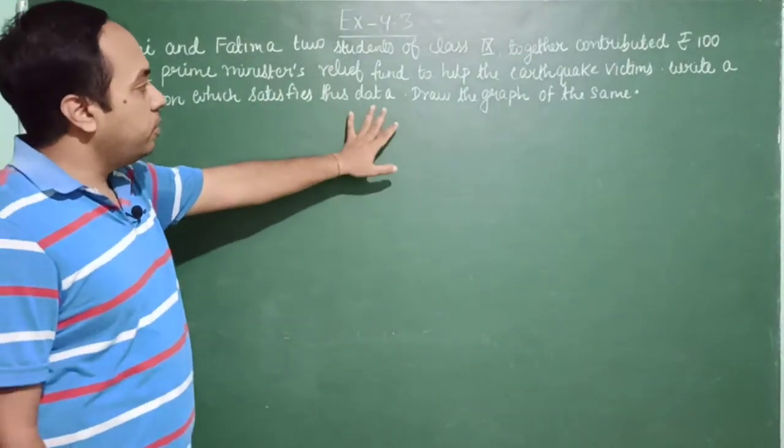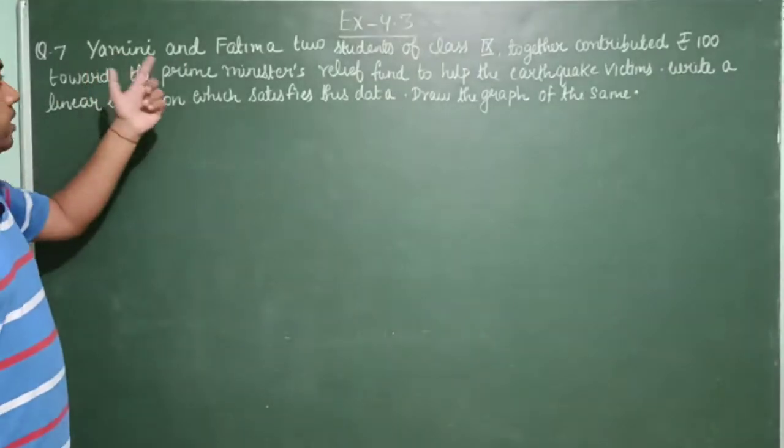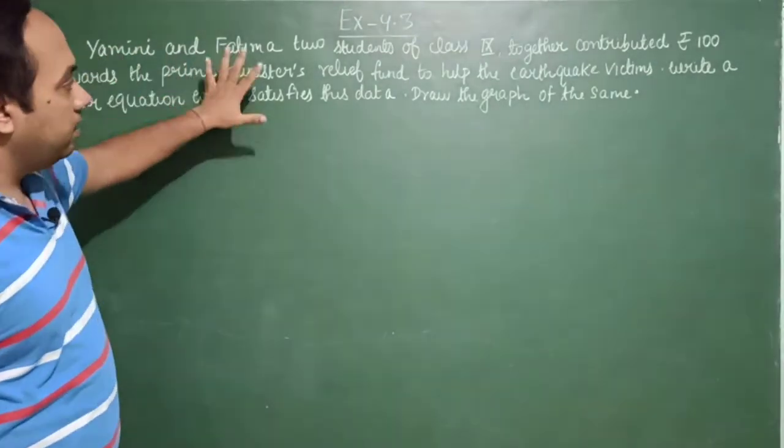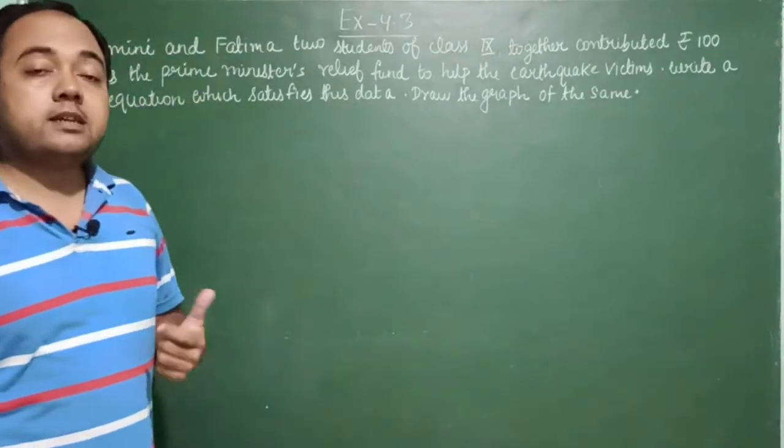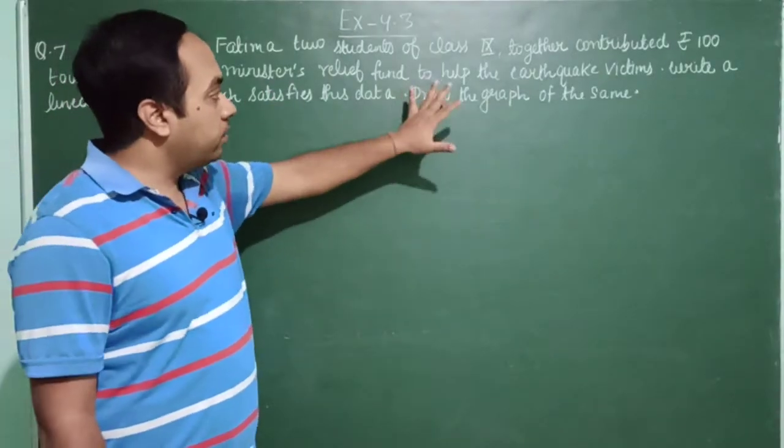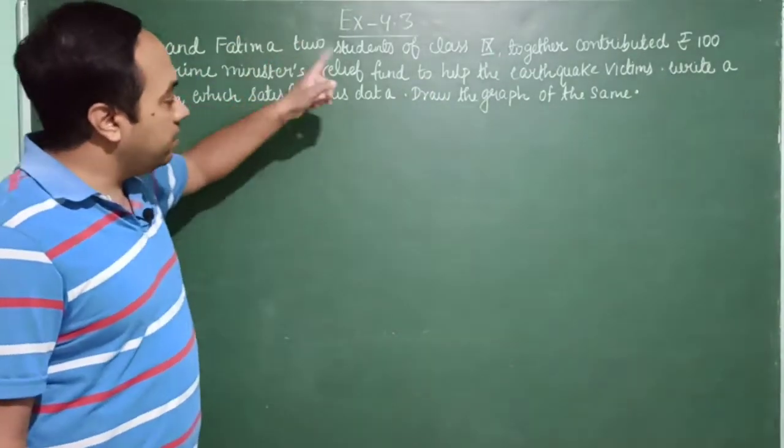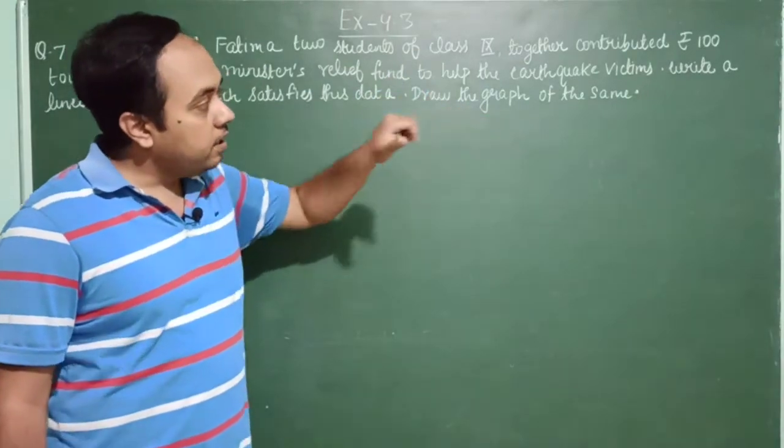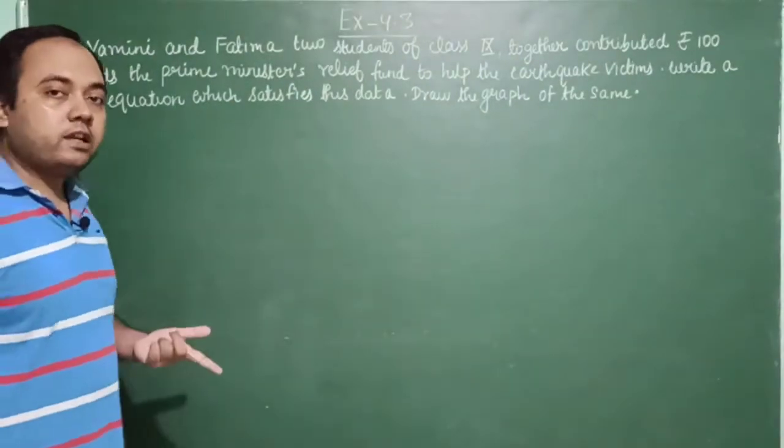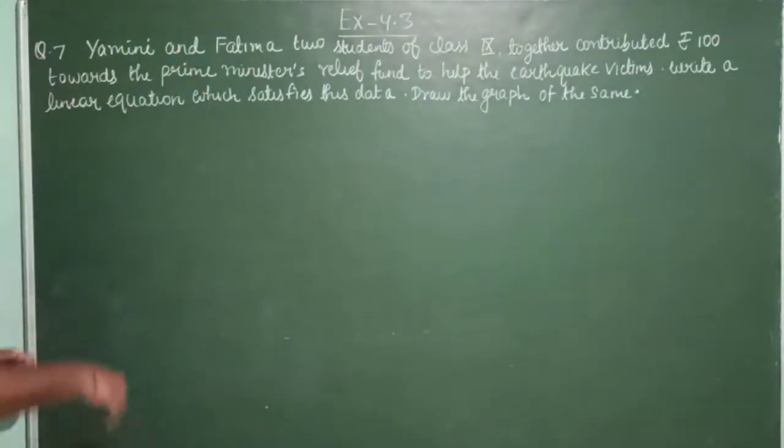Write a linear equation which satisfies this data. First, draw the graph of the same. Now this question, there are two students of class 9, their names are Yamini and Fatima. They together contributed rupees 100 towards Prime Minister's Relief Fund to help the earthquake victims. So using this information, first we will construct a linear equation in two variables, after constructing linear equation in two variables, then we will draw the graph.